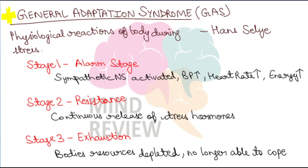GAS model diya kisne hai — do you remember this name — Hans Selye, jinhone yustress ka naam diya tha, as we studied in yesterday's video. So Hans Selye has given this model — General Adaptation Syndrome — yeh explain karne ki koshish karte hain ki hamare kya physiological reactions hote hain when we are under stress or when we are facing a stressful situation. According to Hans Selye, there are three stages.